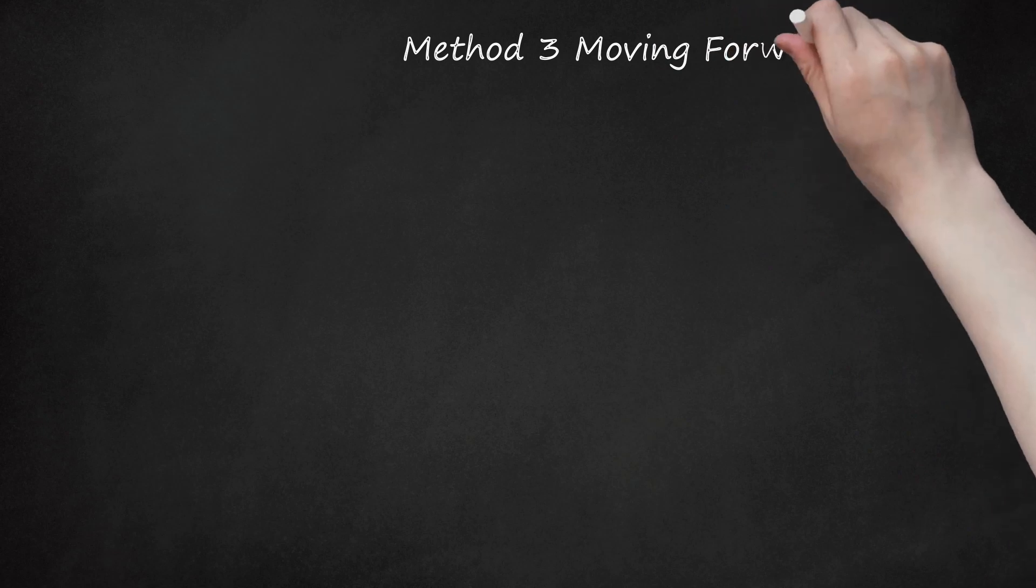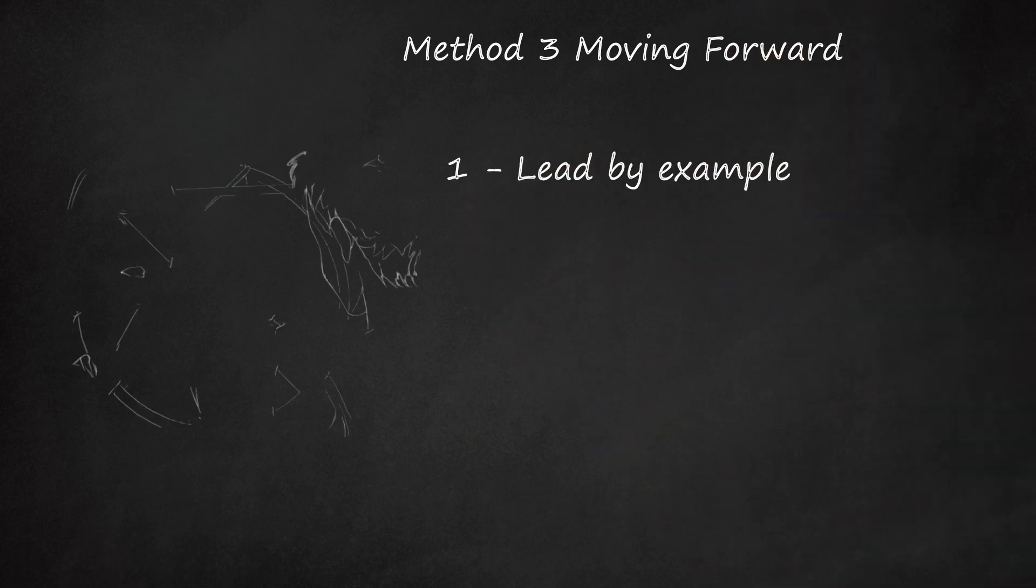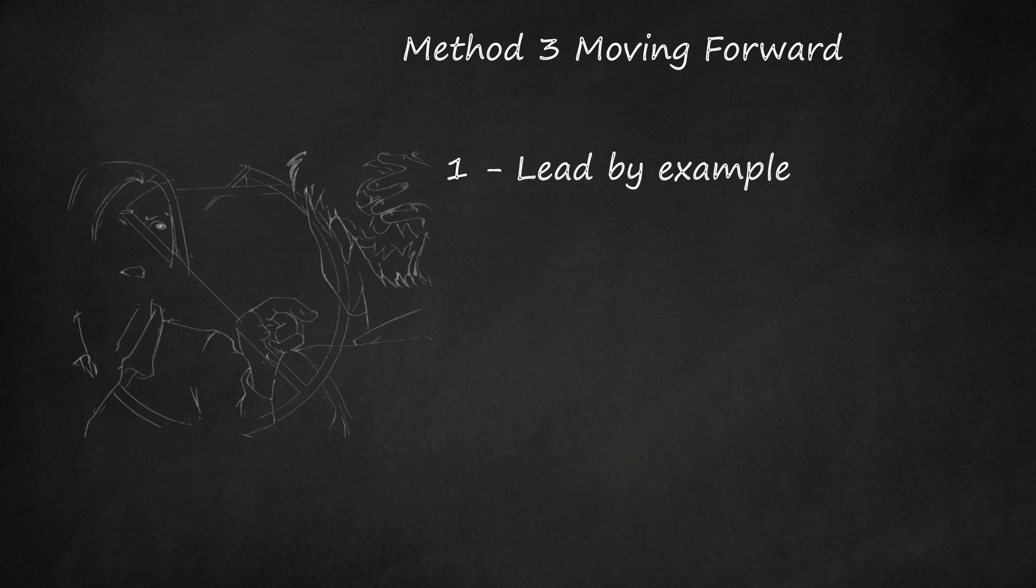Method 3: Moving Forward. One, lead by example. One of the best ways you can deal with an overly critical person is to foster your own sense of positivity. Avoid allowing the critical person to make you feel negative. Show him or her how to be a happier, more positive person. If someone is criticizing everything you do, give them the opposite response. This helps show them they cannot drag others into their negativity. If your girlfriend is berating you because she disagrees with your political beliefs, respond with something like, isn't it wonderful we live in a country where we're all entitled to our opinion?